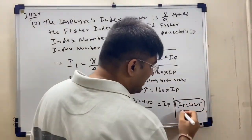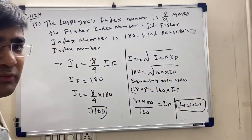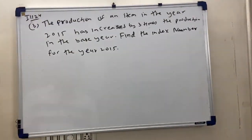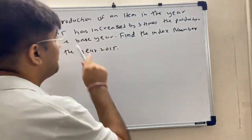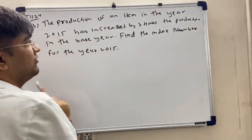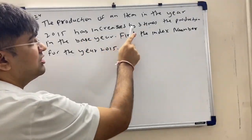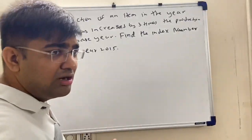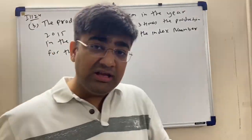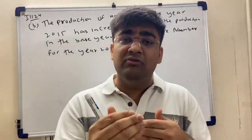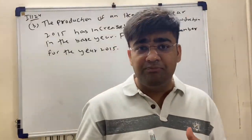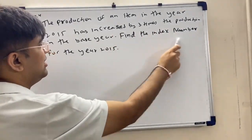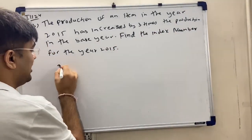The second two-mark sum is complete. Next sum: the production of an item in the year 2015 has increased by three times the production of the base year. Find the index number using P1 upon P0 into 100. Here the value is not directly given — it has increased by three times.